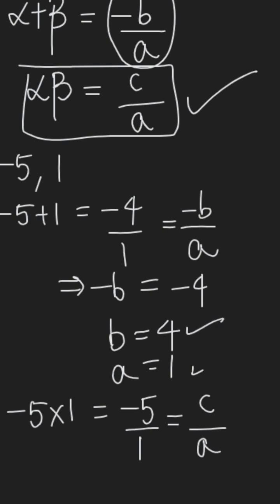So we got b, we got a, and we got the constant term, which is negative 5 here.